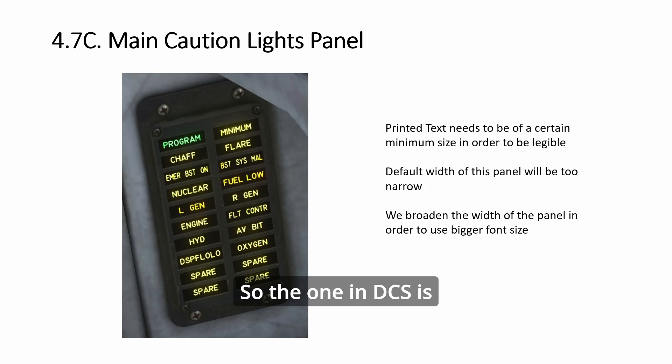So the one in DCS is pretty narrow as you see here. But in order to do 3D printed text, the embossed version, not the cutout, the cutout will require even bigger fonts. So the embossed version needs to be about 4 to 4.5 in order to be readable.